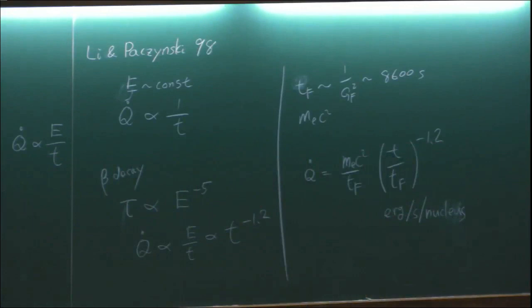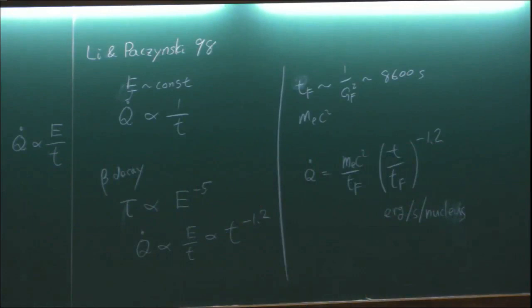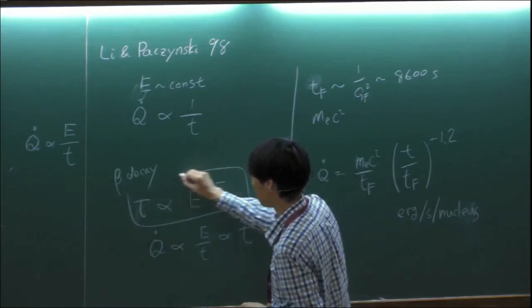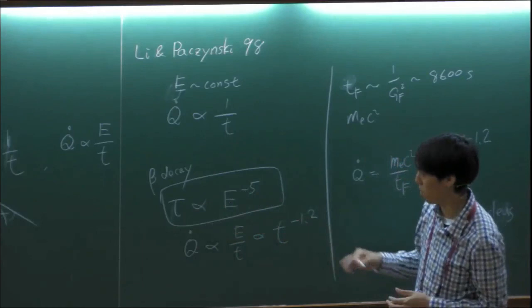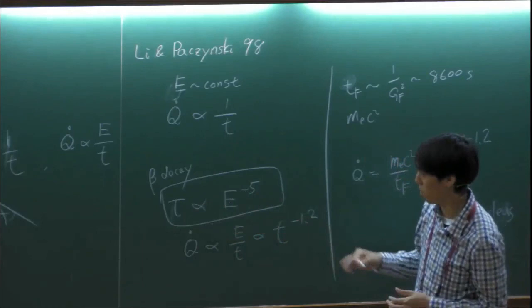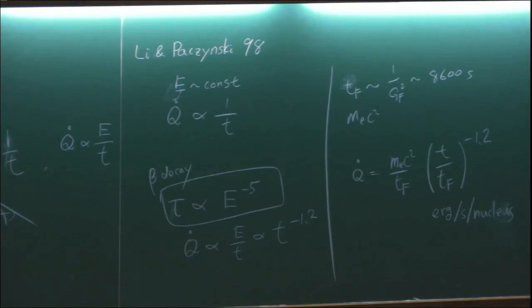Now I want to refine this calculation. Specifically, I want to calculate how the lifetime of beta-unstable nuclei depends on the beta decay energy. This is what Fermi developed in the 1930s. In beta decay, a parent nucleus with a neutron decays to a daughter nucleus — converting the neutron to a proton — and emits an electron and an anti-electron neutrino.